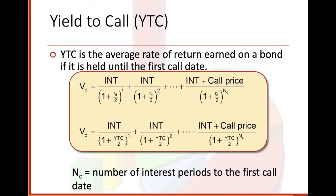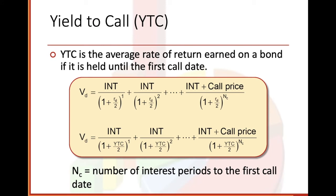Yield to call, YTC — the average rate of return earned on a bond if it is held until the first call date. N_C is the number of interest periods to the first call date. We take our interest divided by (1 plus our rate divided by 2), summing from period one to however long we're holding it. If this were 10 years, it would go to period 10.